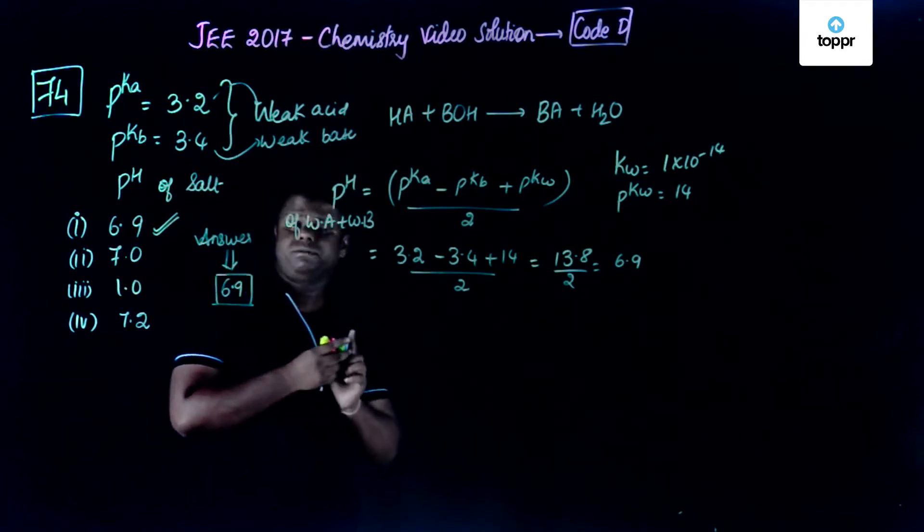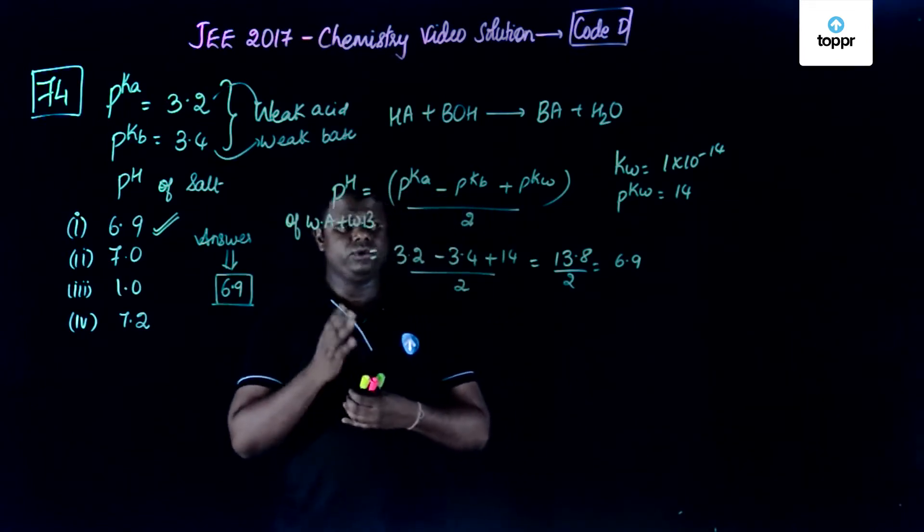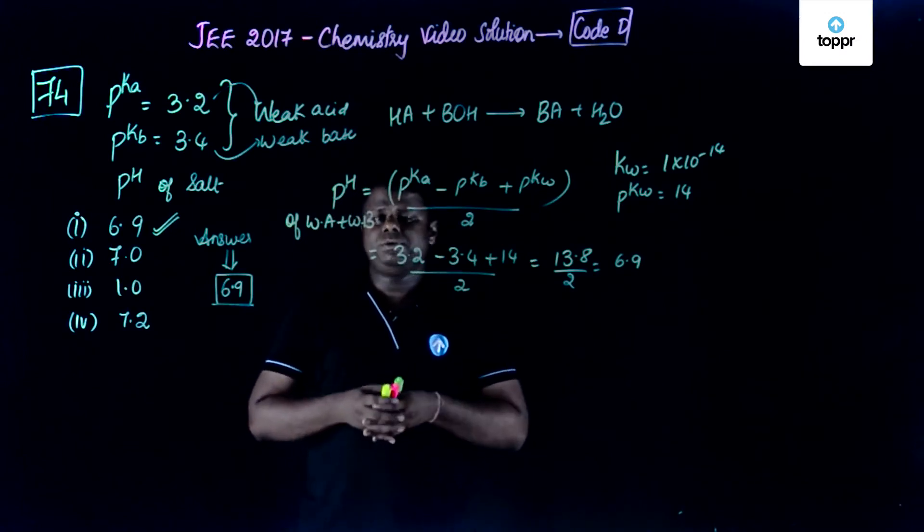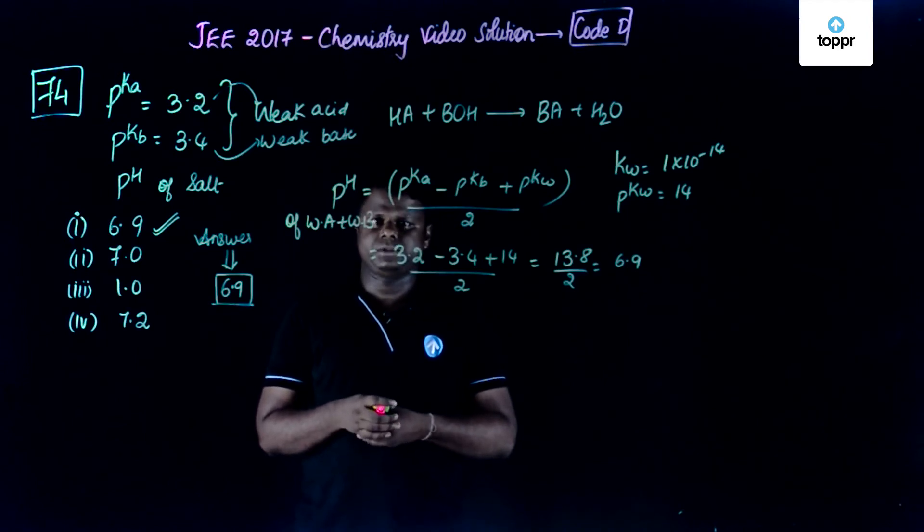So this was about question number 74 wherein we studied how to calculate the pH of a solution wherein you have a weak acid and weak base together. I hope you like this video. For more videos and updates please like, comment or subscribe to Topper Videos.